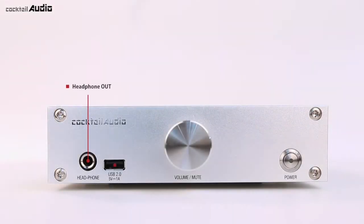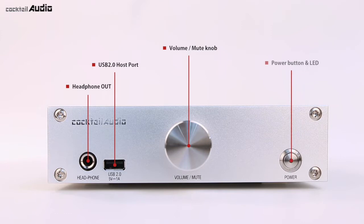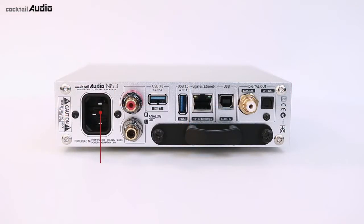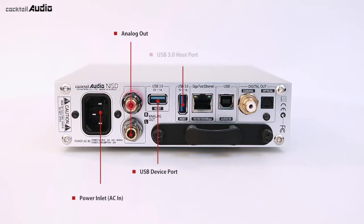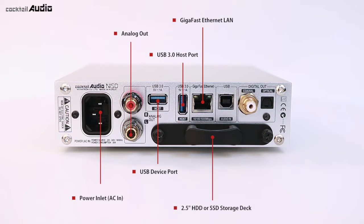On the front panel: headphone out, USB 2.0 host port, volume/mute knob, power button, and LED. On the rear: power inlet (AC in), analog out, USB device port, USB 3.0 host port, Gigabit Ethernet LAN, 2.5-inch HDD or SSD storage deck, USB audio in, and digital out coaxial/optical.